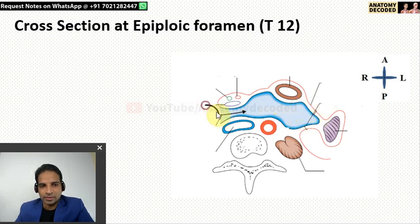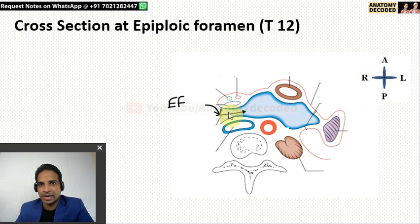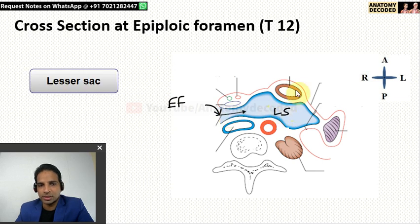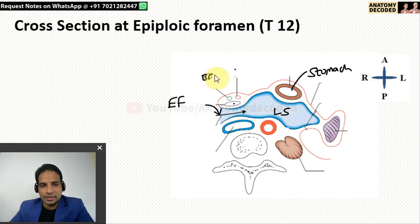This arrow mark sits in the epiploic foramen. It is also referred to as the foramen of Winslow. So two names for this particular region: the epiploic foramen, also referred to as the foramen of Winslow — the communication between the greater sac and the lesser sac. This is the lesser sac shown here, and this is the stomach. Just behind the stomach is the lesser sac. This shows the lesser omentum, and this is the right free margin of the lesser omentum containing the portal vein, hepatic artery and bile duct. Bile duct is towards the right side, hepatic artery is towards the left side, and behind both these structures is the portal vein.